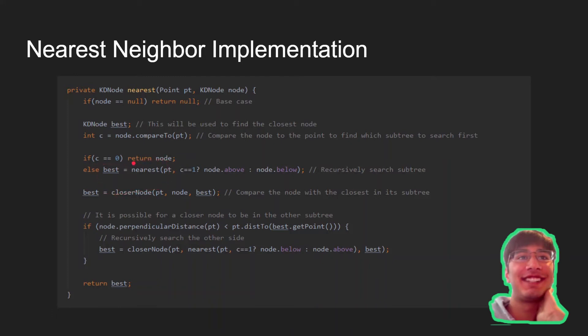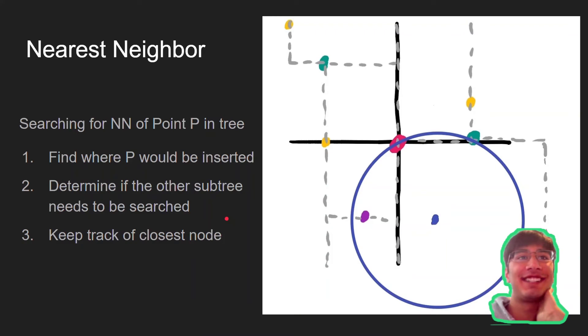This is the recursive call, and once we clear the recursion, then we compare the current node with the closest we found in that subtree, and the main bit of insight is here with the perpendicular distance. So this is how we determine if we need to search the other side of the tree.